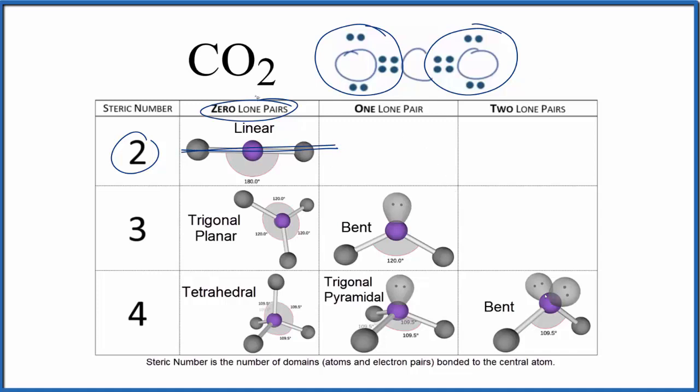So in answer to our question, the steric number for CO2, carbon dioxide, is two with no lone pairs.